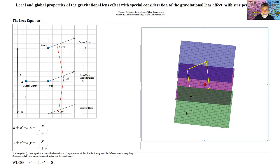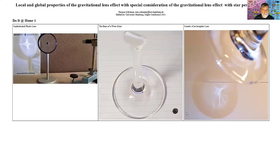There are multiple light paths possible and the observer could see multiple images of a source. To study the mapping we use the conformal command from Maple, which maps an orthogonal grid by a complex version of our lens mapping. Depending on the galactic parameter, it shows the brightness or caustic pattern in the observer plane. Explore is a wonderful tool to play around with the parameters and coordinates.